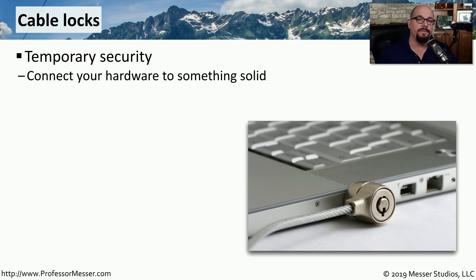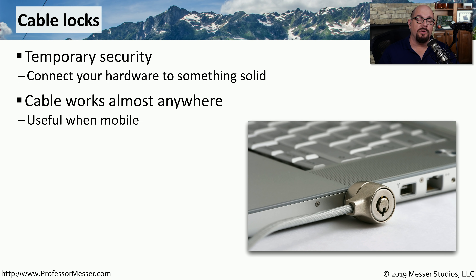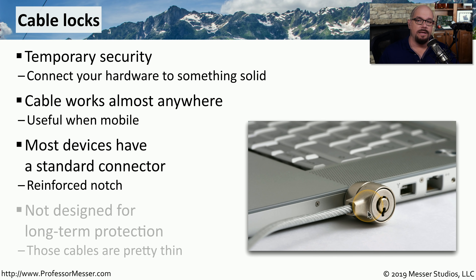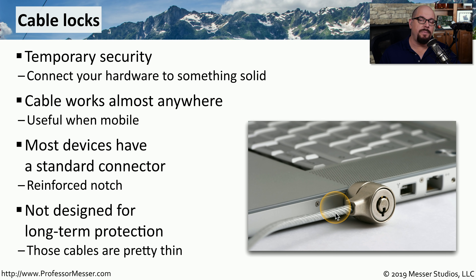One way to protect devices from being stolen is to physically tether them with a cable lock. You can use cable locks in an office environment or when you're mobile to make sure devices stay exactly where you left them. Many mobile devices have reinforced notches so you can insert these cable locks and lock them in place. These cables are thin and can be cut with the right equipment, so they're not designed to be a long-term security solution — they're best for temporarily protecting mobile devices.